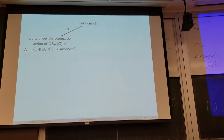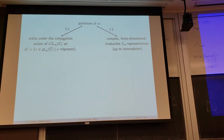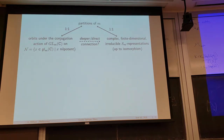A different place where you might have seen partitions is the representation theory of the symmetric group. In particular, if you look at the irreducible representations of the symmetric group, they are labeled by partitions as well — for each partition there's an irreducible Specht module. Obviously there's a bijection between these orbits and irreducible representations of the symmetric group, and you can wonder if this is just a coincidence or whether there's actually some deeper meaning behind this. It turns out that this is actually more than just a coincidence.